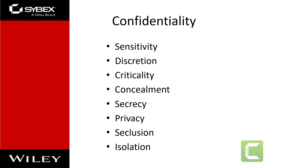How important each specific principle is to a specific organization depends on the organization's security goals, requirements, and the extent to which its security might be threatened. The first principle of the CIA triad is confidentiality — the concept of measures used to ensure the protection of the secrecy of data, objects, or resources. The goal of confidentiality protection is to prevent or minimize unauthorized access to data.